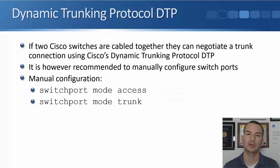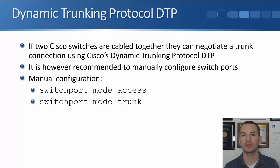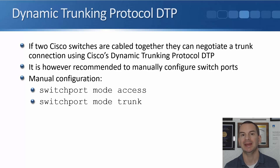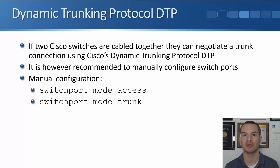In this lecture you'll learn about DTP, the Dynamic Trunking Protocol. If two Cisco switches are cabled together, it's possible for them to automatically negotiate a trunk connection on those ports using Cisco's proprietary DTP. It is however recommended not to use this, and to manually configure the switch ports instead using the commands we've been using earlier in this section.